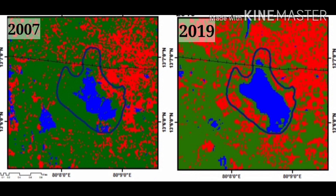In November 2008, due to a consistent spell of rainfall, the water level of Ambatur Lake increased, resulting in the flooding of the encroached residential area. The flooded residential region was subsequently demolished, which can be seen clearly in the 2019 image.